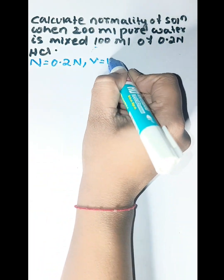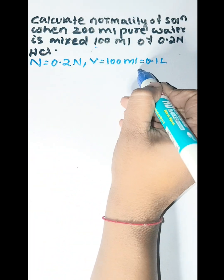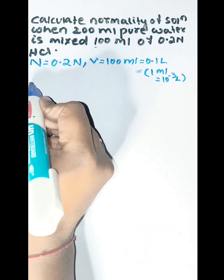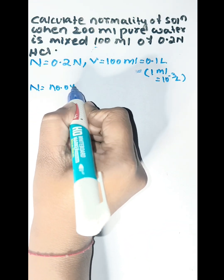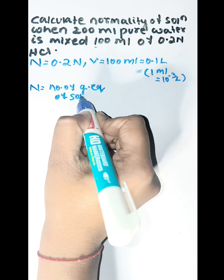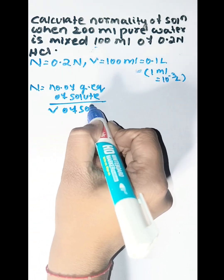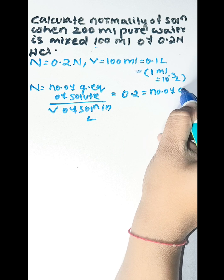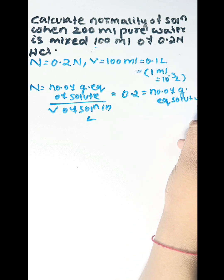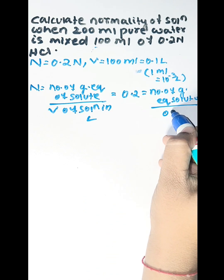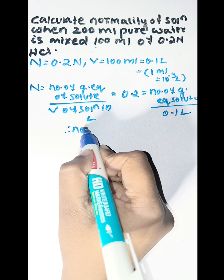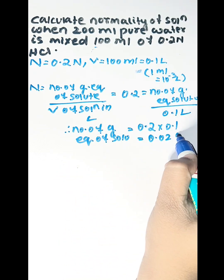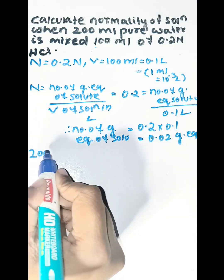The volume of solution is 100 ml, which is equal to 0.1 liter, since 1 milliliter is equal to 10 to the power minus 3 liter. We know that normality equals the number of gram equivalents of solute divided by volume of solution in liters. Normality is 0.2 and volume is 0.1 liter, so solving gives us gram equivalents of solute equal to 0.2 × 0.1 = 0.02 gram equivalents.